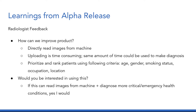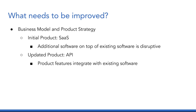We received important feedback on the alpha release. The radiologists had interest in the solution. However, they preferred reading images directly from the machine, since manually uploading files is time-consuming. They also advised us to rank patients based on criteria such as age, gender, smoking status, occupation, and location. Prior to alpha release feedback, we had initially proposed a SaaS product. However, it is disruptive for the radiologists to use additional software on top of their existing software. Therefore, we decided to offer an API which readily integrates with existing radiology platforms.